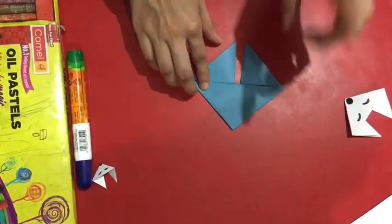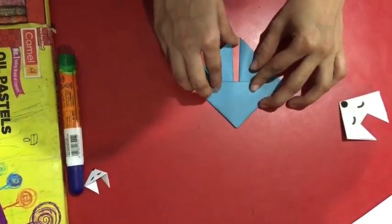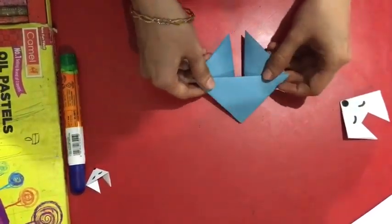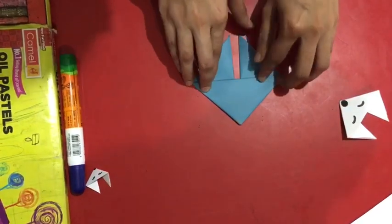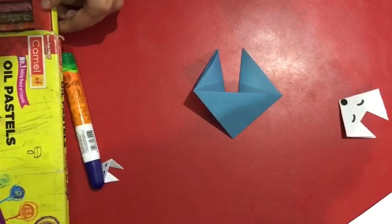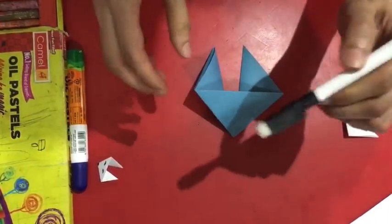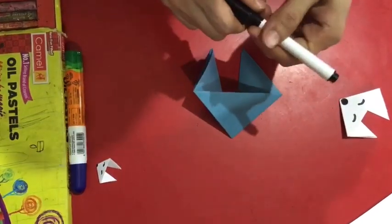But something is missing students. Yes, eyes and nose. To make eyes and nose, you will need a black crayon. Here I am using a black sketch pen, but you can use black crayon.